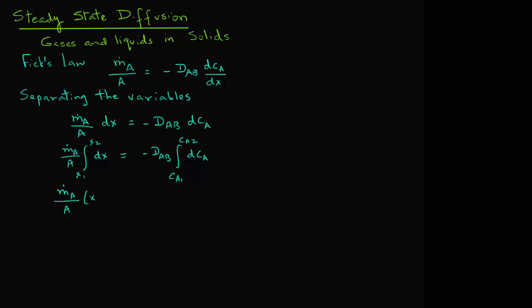We evaluate these integrals, which are simple integrals, so we get m_A divided by A times (x2 minus x1) equals minus D_AB times (C_A2 minus C_A1).